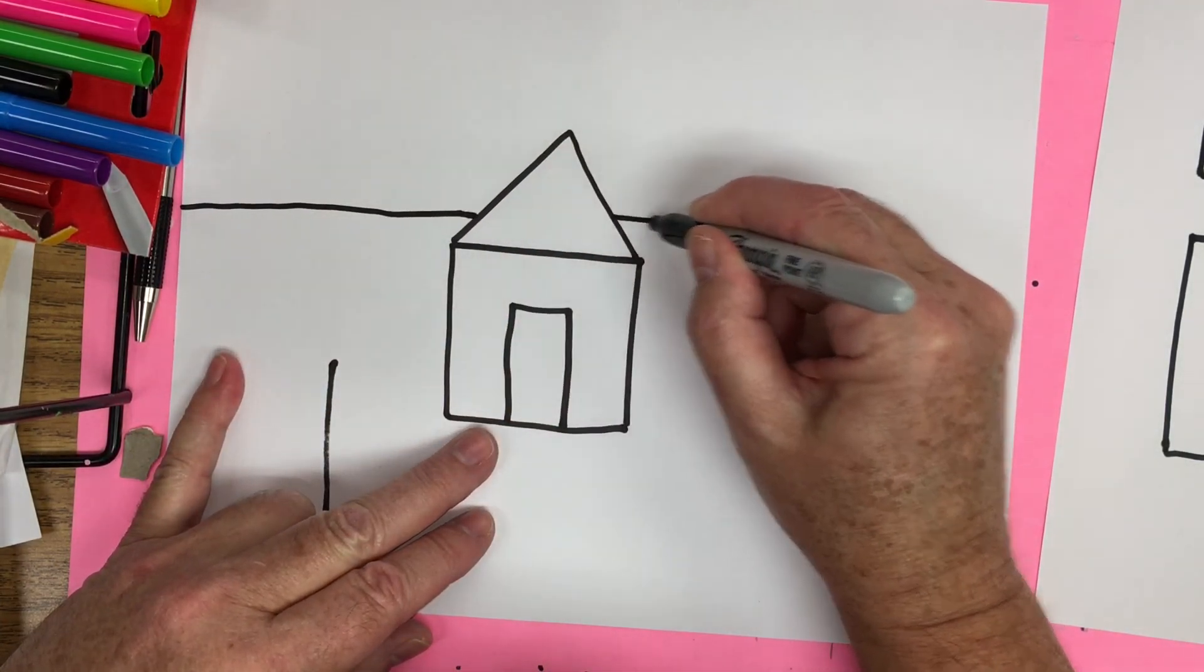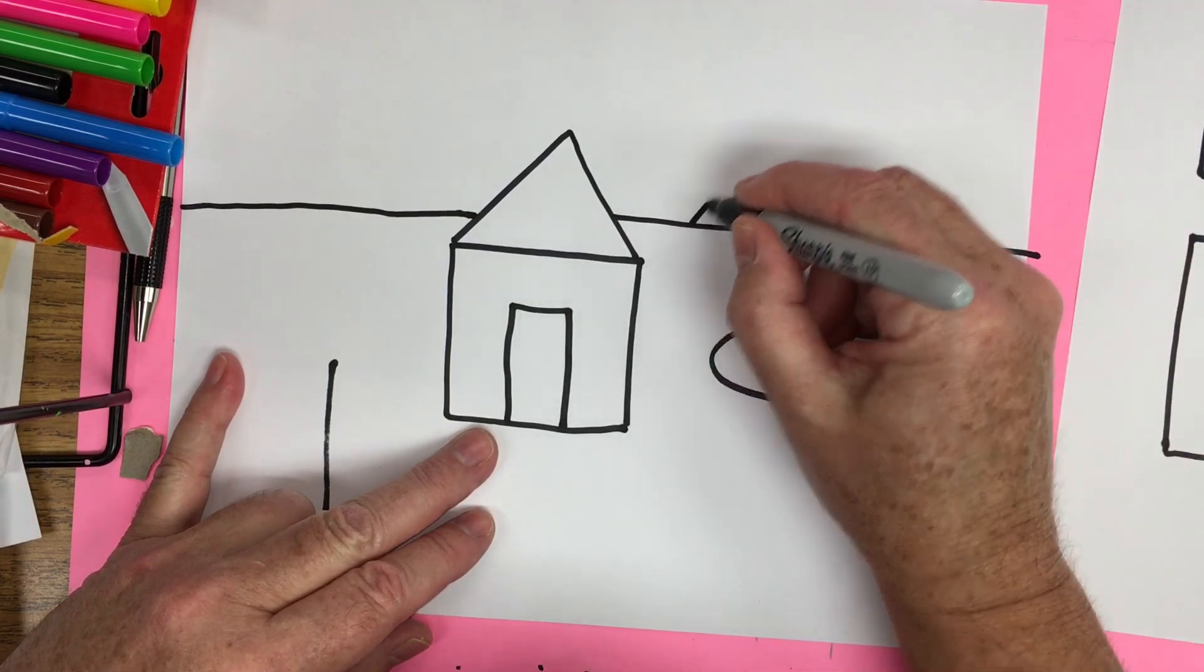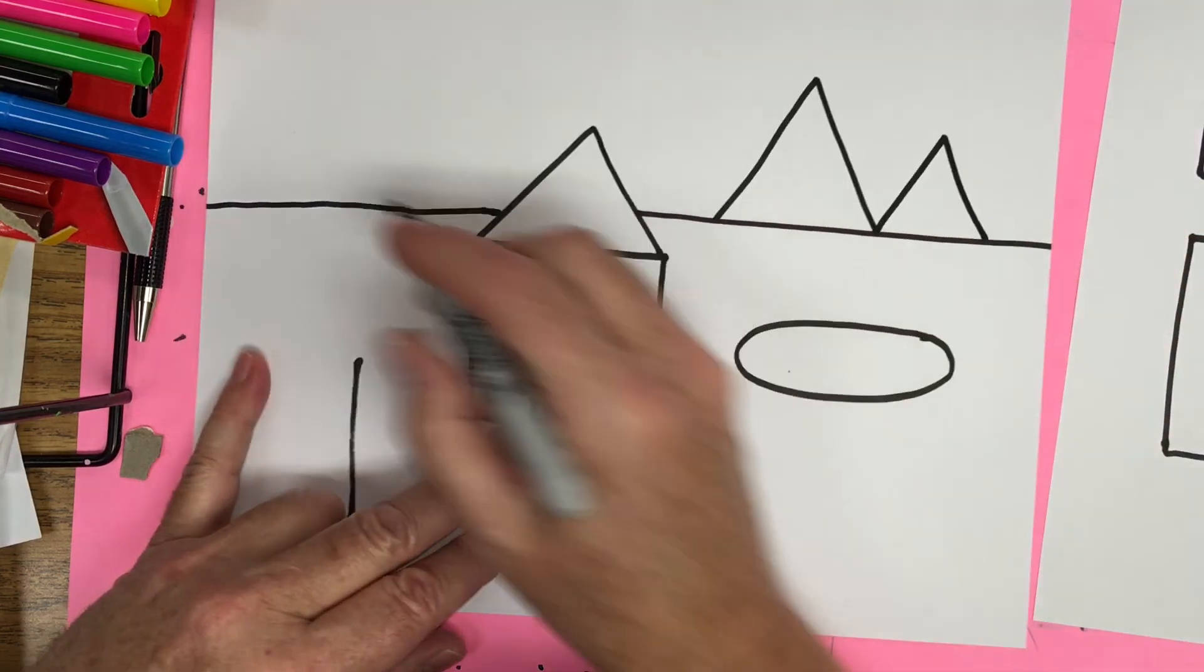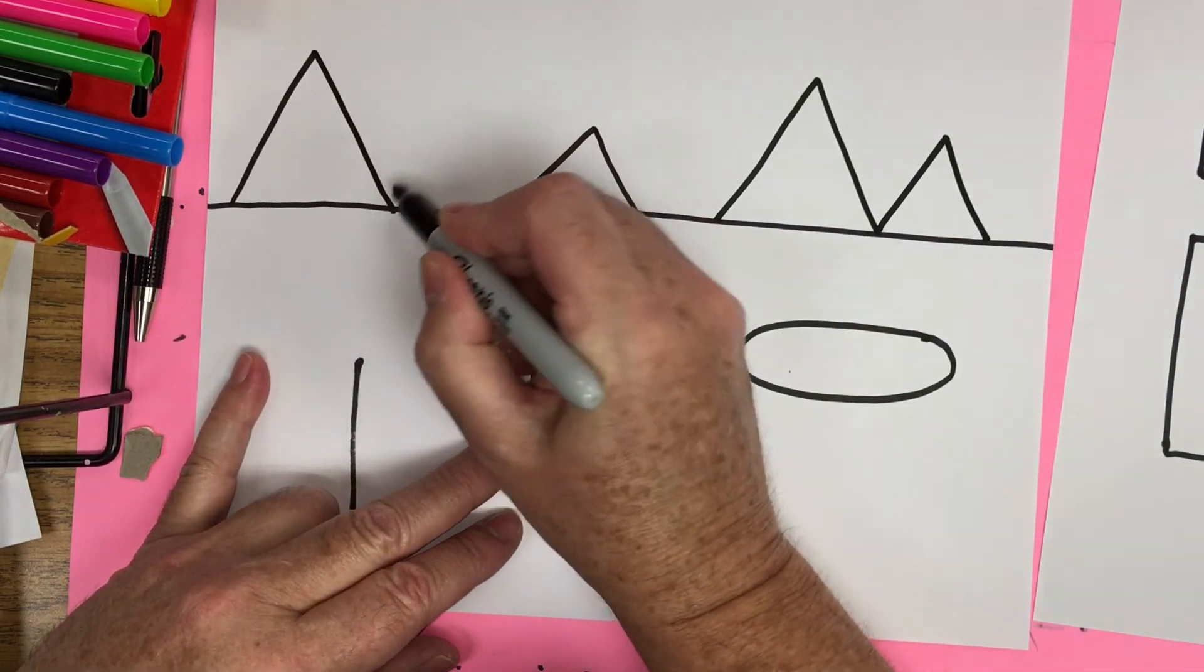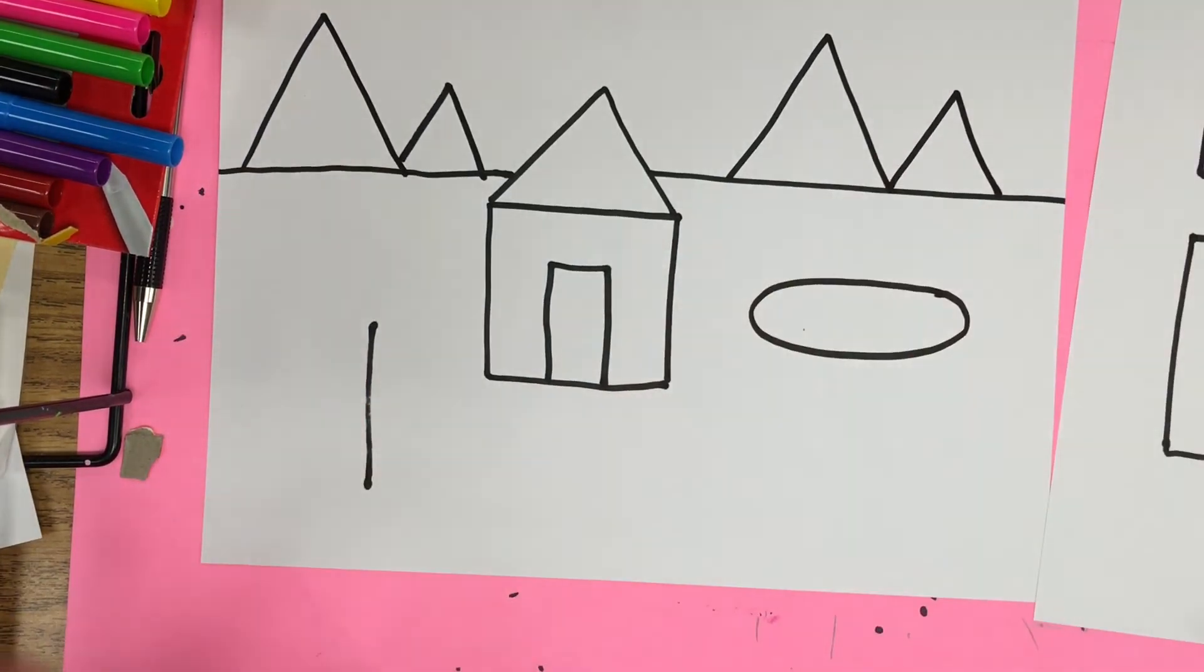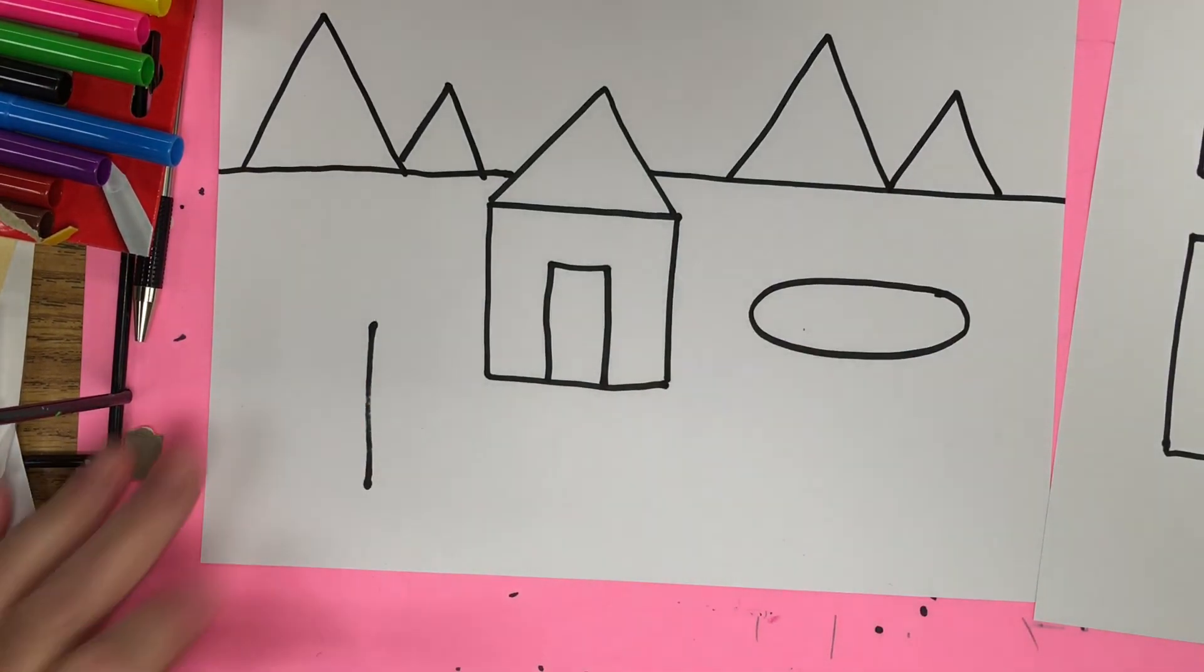So you can have fun creating pictures with your shapes. I'm going to put a horizon line back here. And how about some triangles in the background? These could be mountains. So I want you to use your imagination and create your own pictures using shapes.